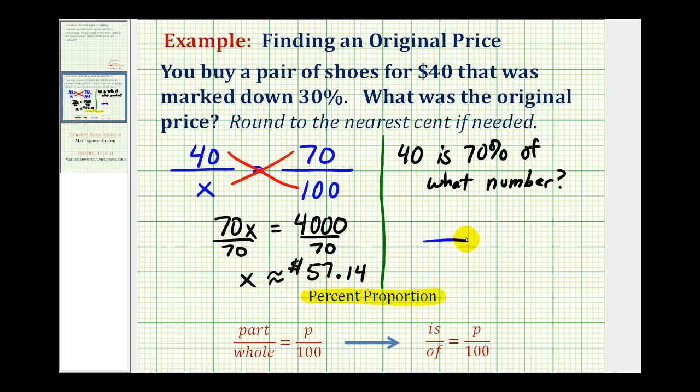So we'll have a proportion. Notice how we're given the percentage, which is always a number compared to 100. So one ratio is 70 to 100.